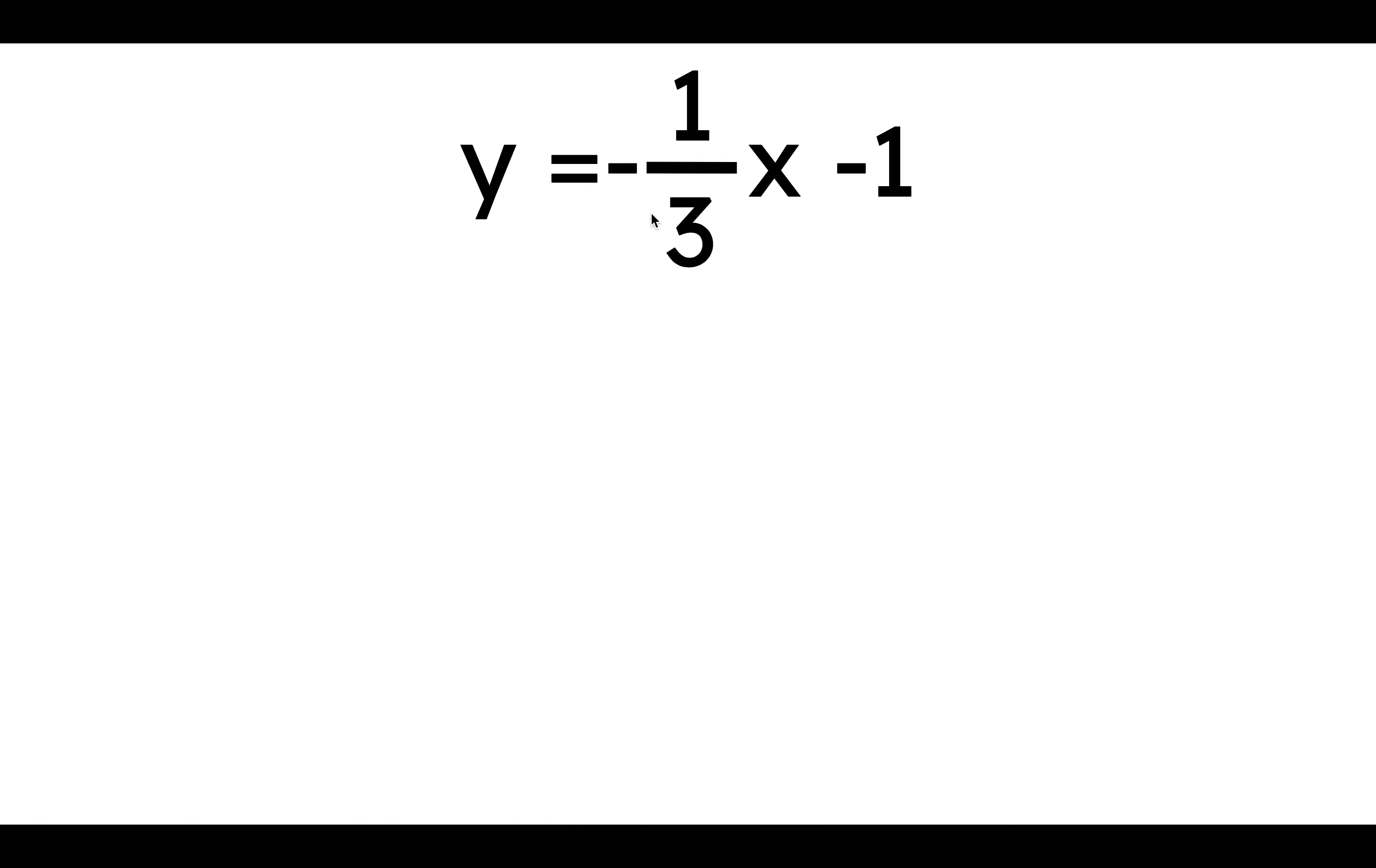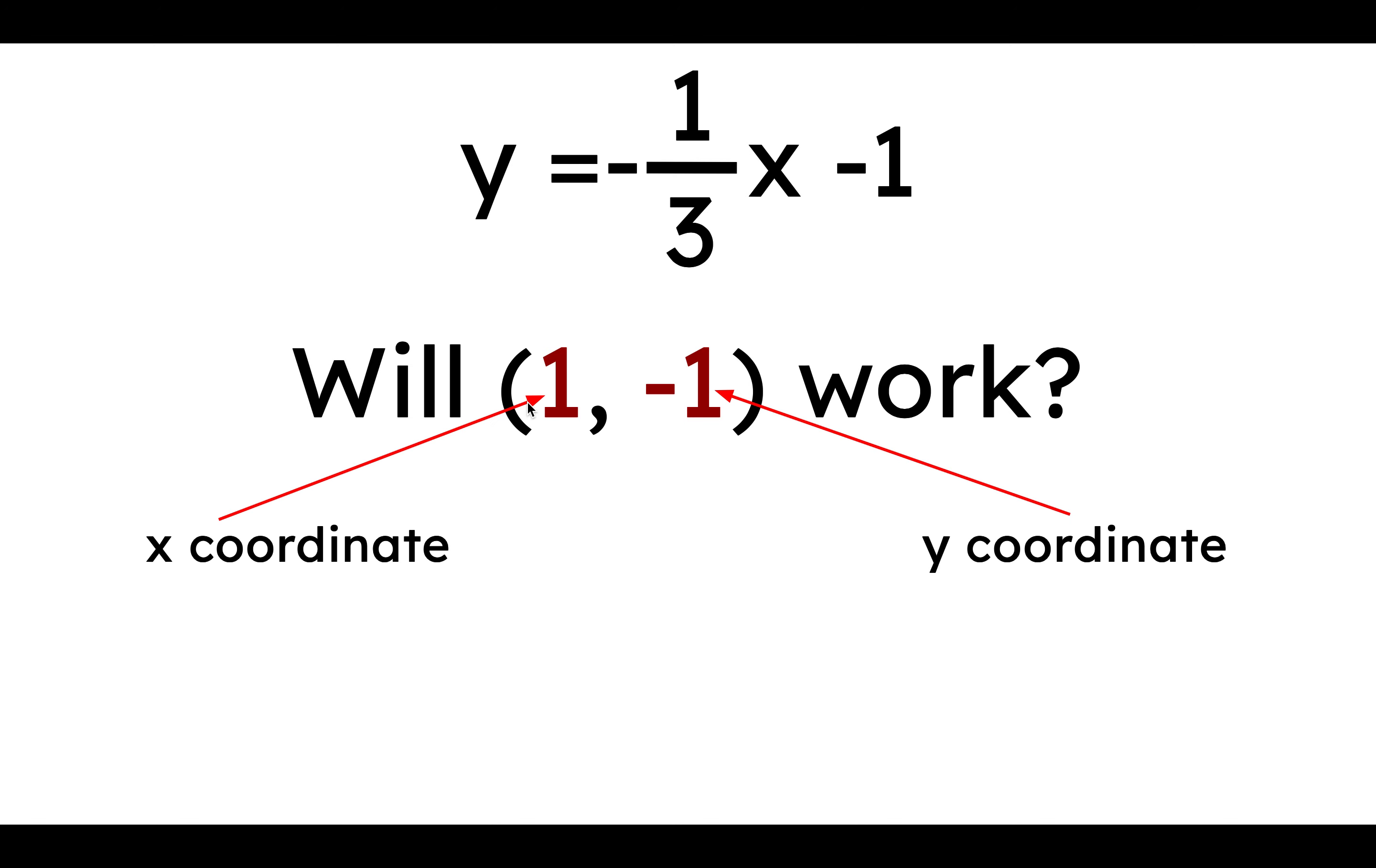So let's see. Here's our equation. Will 1, negative 1 work? Well, remember that this 1 is the x-coordinate, so we're going to plug it in here. This is the y-coordinate. We're going to plug it in for y. And if it's the line being described, then everything should be harmonious and happy.